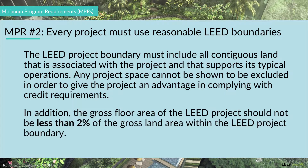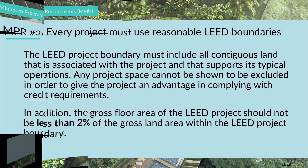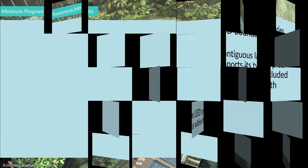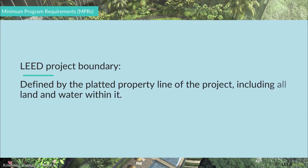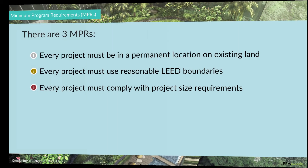In addition, the gross floor area of the LEED project should not be less than 2% of the gross land area within the LEED project boundary. The LEED project boundary is defined by the platted property line of the project, including all land and water within it.